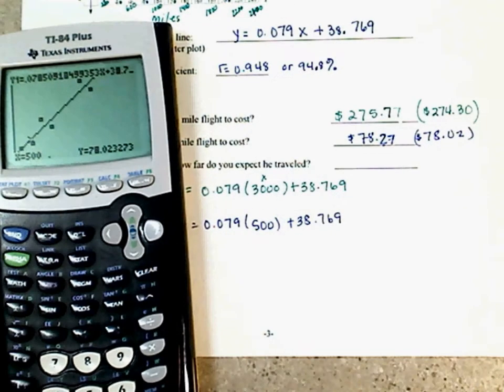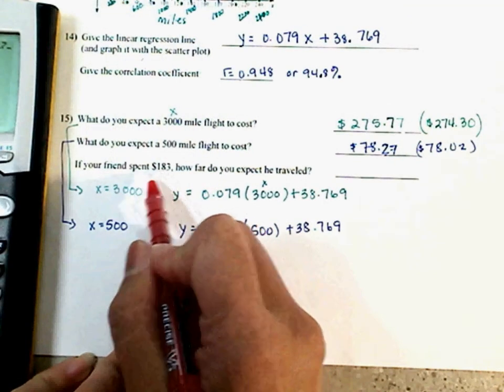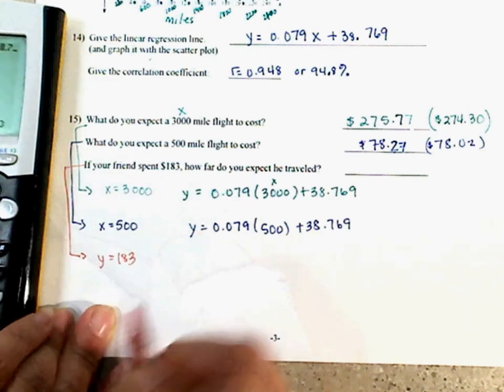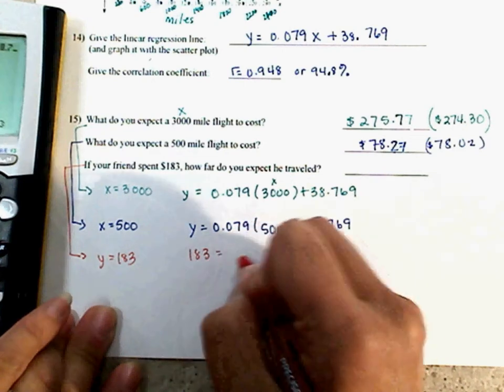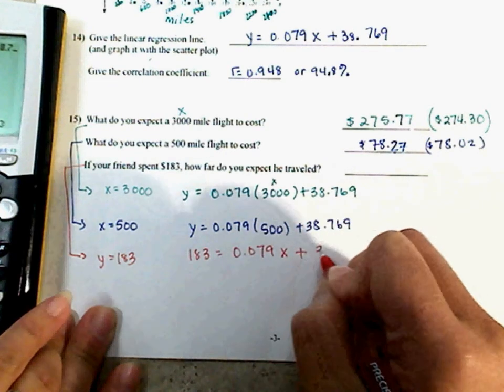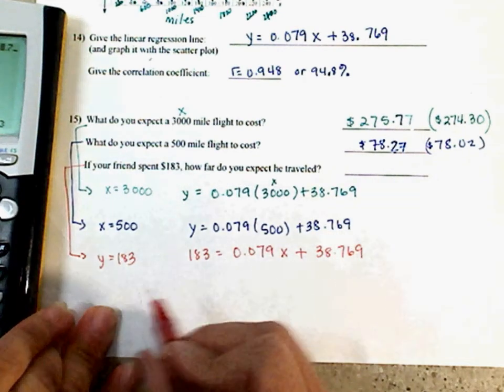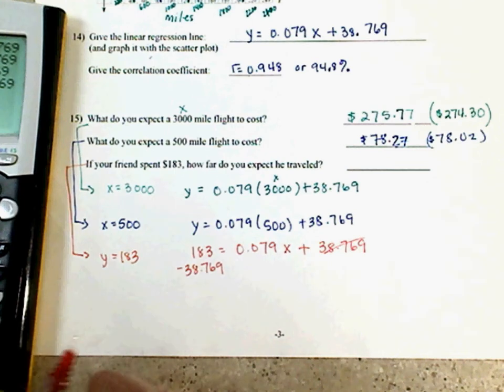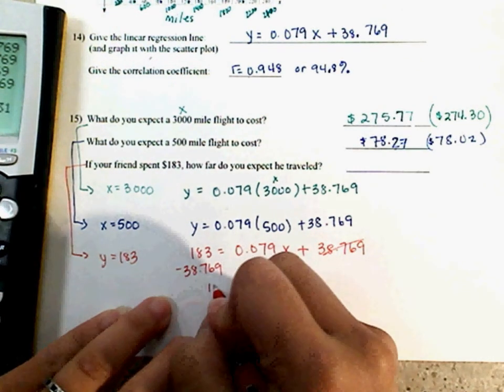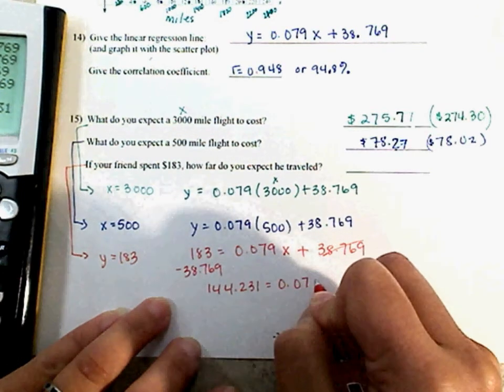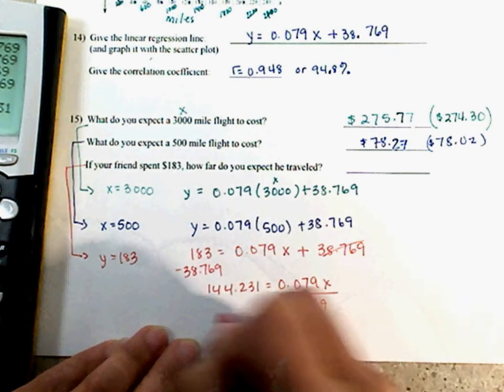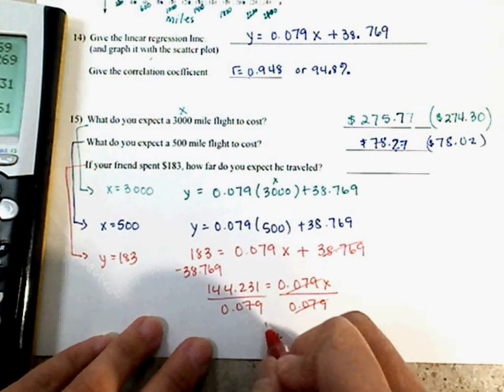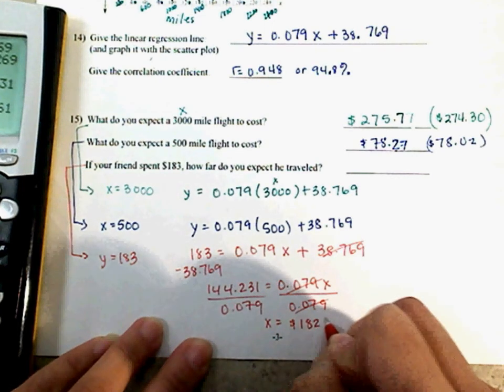Second part. What do you expect a 500 mile flight to cost? Same thing. Your X is at 500. Y equals 0.079 times 500 plus 38.769. And you can do it either way. 0.079 times 500 plus 38.769. Comes out to be $78.27. But if you get the calculator way, let's look at our window. Our window starts at 22, so we can put 500 there. Second calc value, 500, $78.02. Don't forget your units. Put that dollar sign on there.